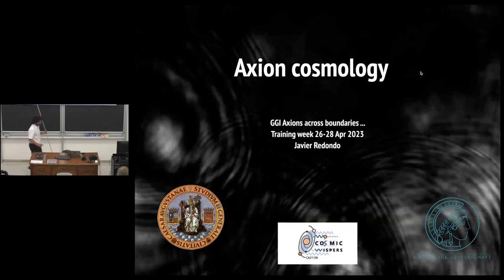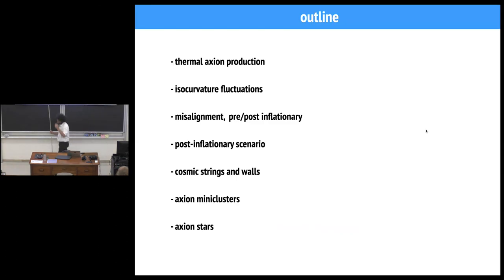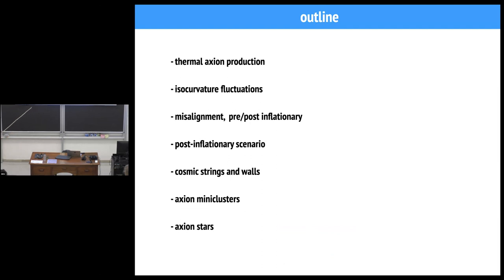I was asked to get you acquainted with some aspects of QCD axion cosmology, and Enrico gave me a nice list of topics to cover: starting with misalignment, ways in which axions can make up the dark matter of the universe, the two cosmological scenarios — pre- and post-inflationary — thermal axion production, isocurvature fluctuations, cosmic strings and walls, axiom mini-clusters, and axion stars. I'm going to cover these, but in a very unusual way — perhaps contrary to Enrico's wishes — I'm going to start with the things I'm not an expert on.